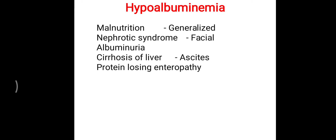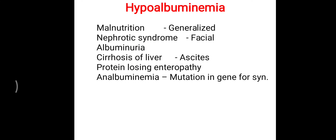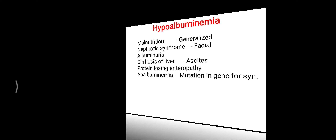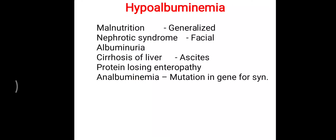One more condition is protein-losing enteropathy, where albumin is lost from the gastrointestinal tract, leading to hypoalbuminemia. One rare condition is analbuminemia, meaning there is no production of albumin at all, and that is due to a mutation in the gene responsible for albumin synthesis, which is present on chromosome number 4. Simply, if the raw material — meaning amino acids — is not present, that can lead to hypoalbuminemia.